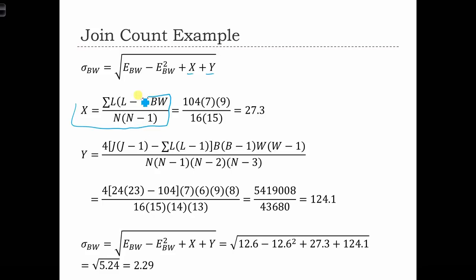This was the formula for x. And we decided that the sum of l times l minus 1 is 104. We had 7 blacks and 9 whites over 16 times 15, n times n minus 1. It gives us 27.3.